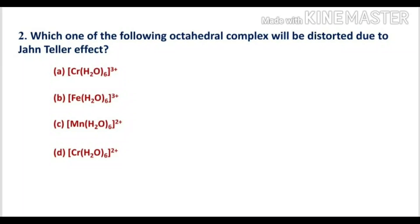For option D, chromium is in the +2 oxidation state with d4 configuration. One electron is present in the Eg orbital (Eg1 configuration), so we can expect Jahn-Teller distortion. Therefore, option D is the correct answer.